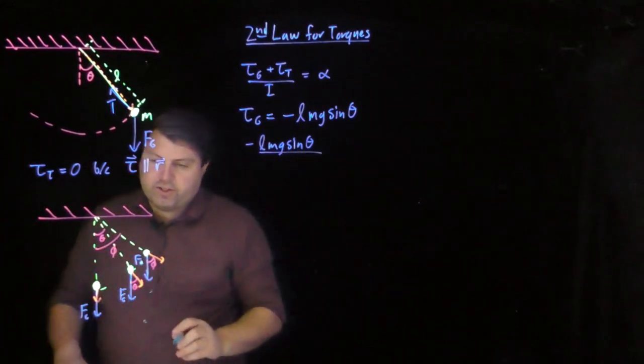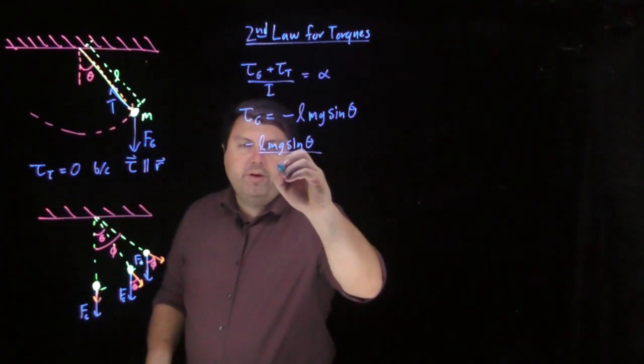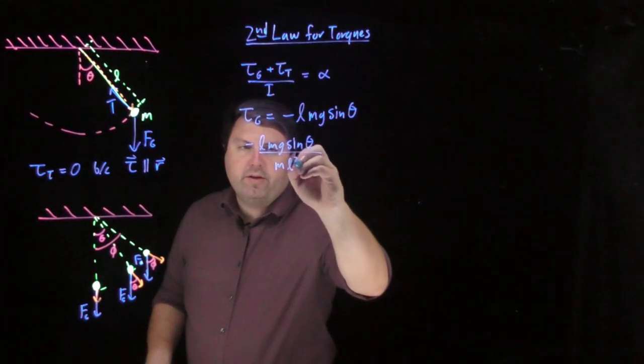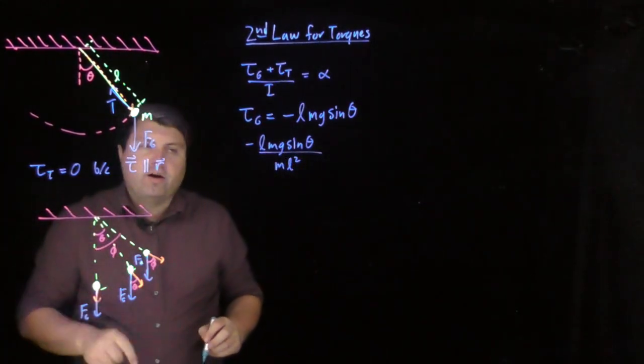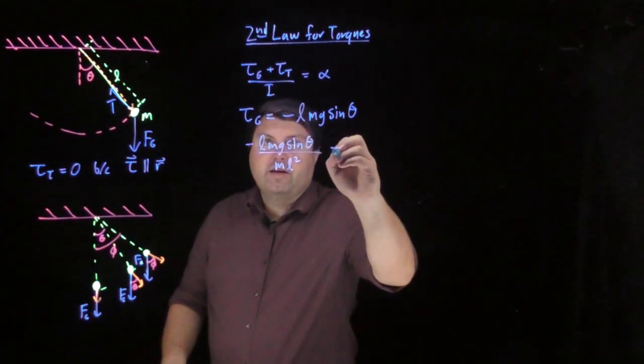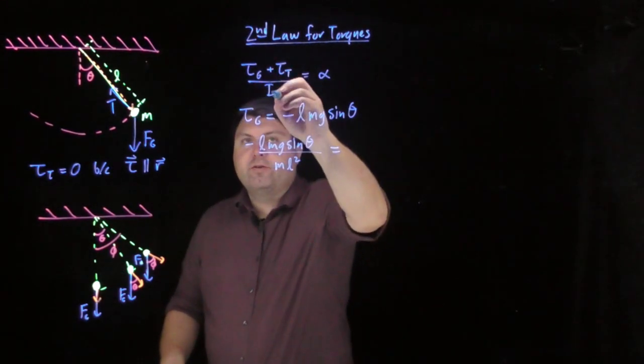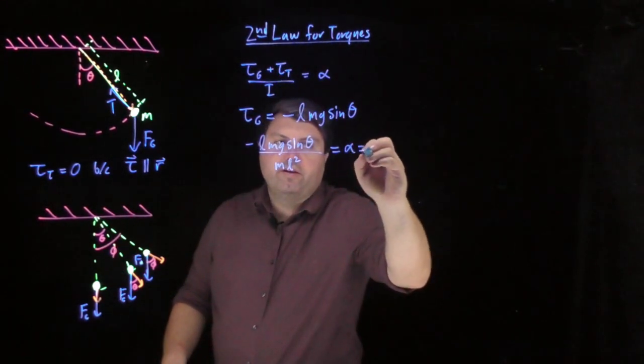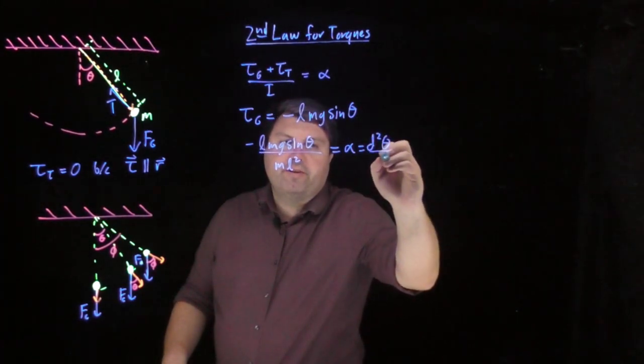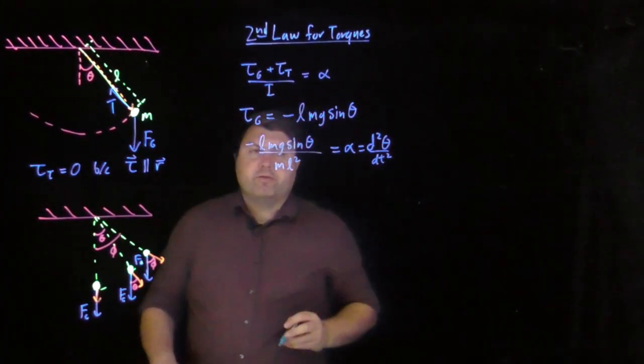Our moment of inertia, this is just a single point mass. So we can just do MR squared or ML squared for our pendulum. And that is our sum of our torques over the moment of inertia. And this is then equal to alpha, which is our second derivative of the angle with respect to time.